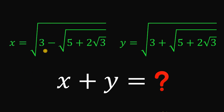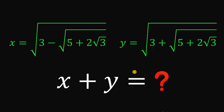Given that x equals square root of 3 minus square root of pi plus 2 times square root of 3, and y equals square root of 3 plus square root of pi plus 2 times square root of 3, the goal is to find the sum of x and y.